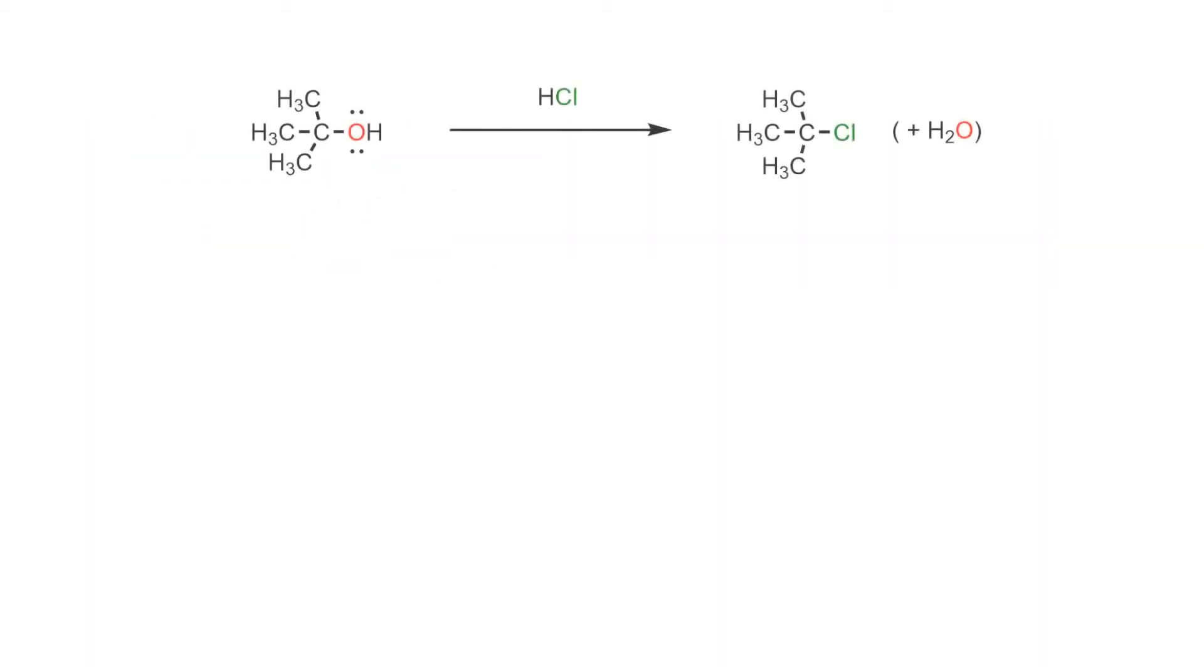When a tertiary alcohol such as t-butanol reacts with hydrochloric, hydrobromic, or hydroiodic acid, a substitution product is formed. In this particular example, t-butyl chloride is formed in which the chloride has replaced the hydroxyl group of the starting material. The byproduct is water.